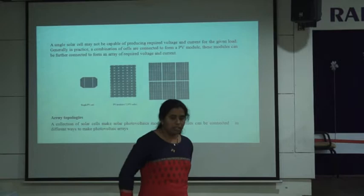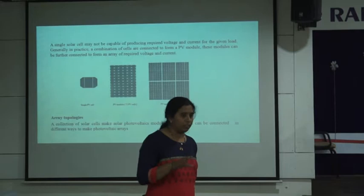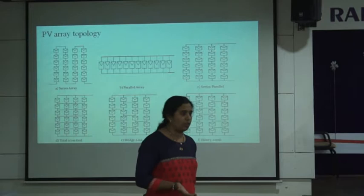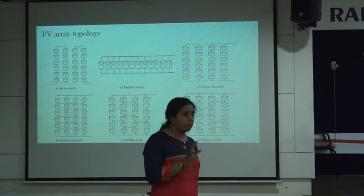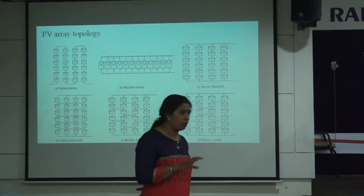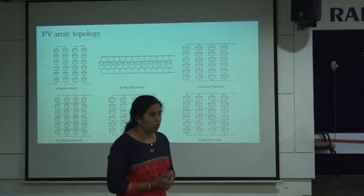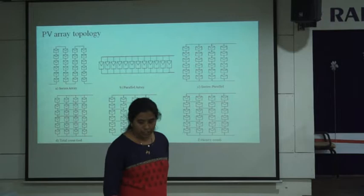A single solar cell combined with others forms a module, and combined modules form an array. Different array topologies are used, and as per the literature, array topology itself affects the maximum power output — different topologies can extract different maximum power levels. Topologies studied include series array, parallel array, series-parallel (SP), total cross-tied (TCT), bridge-link (BL), and honeycomb (HC).